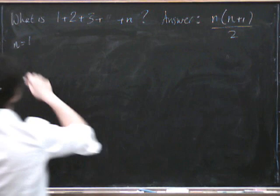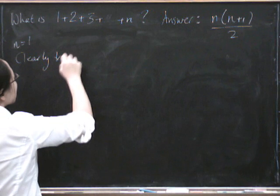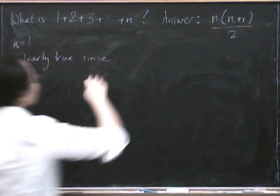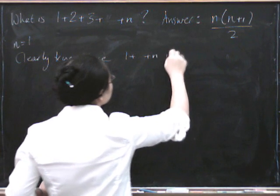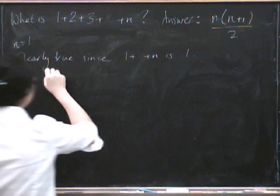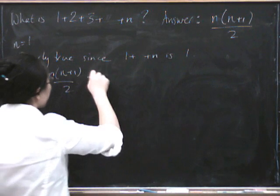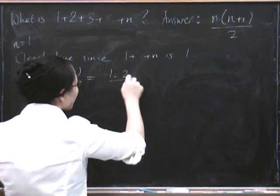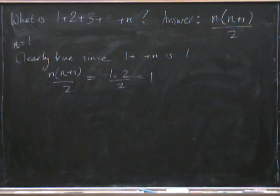So it's clearly true since 1 up to n is just 1, and n times n plus 1 over 2 is 1 times 1 plus 1, which is 2, and then we have to divide it by 2, which is 1. So that's definitely true for n equals 1.